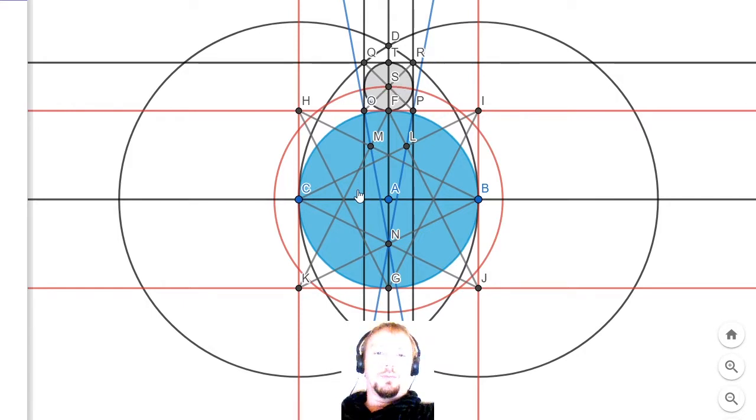Also, strangely for reasons unbeknownst to me, this diagram also solves the age-old maths problem of squaring the circle, which is represented here in red with the red square and the red circle.